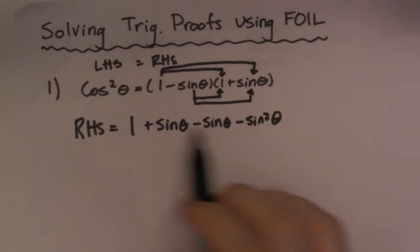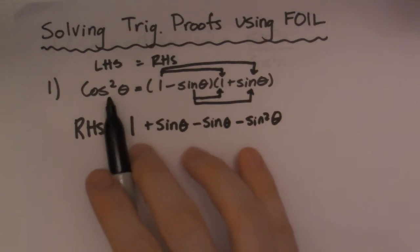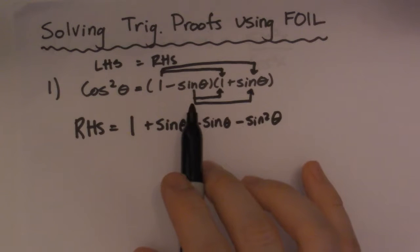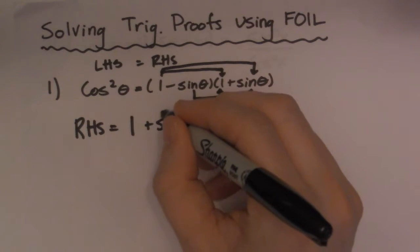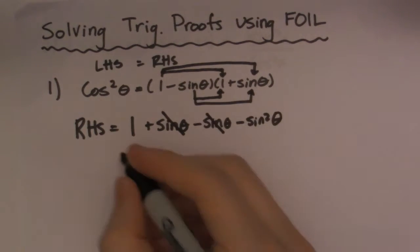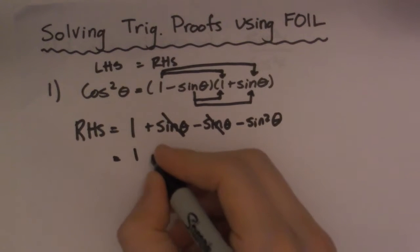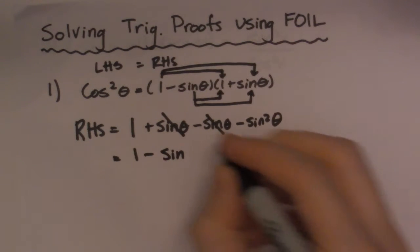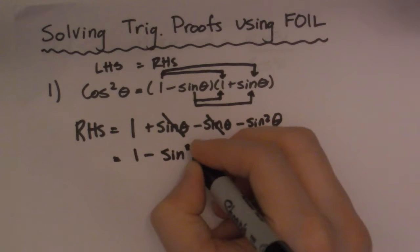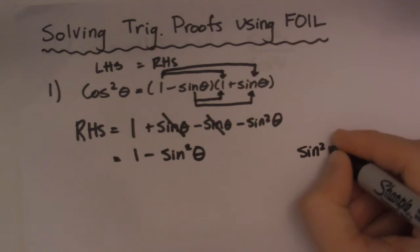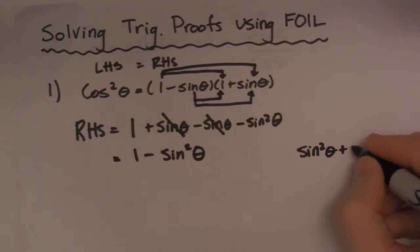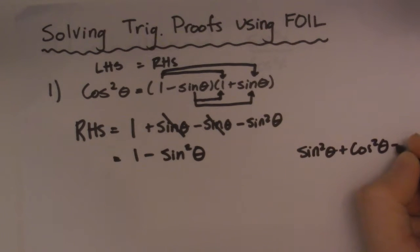So ultimately what we're trying to do is we're trying to prove that this right hand side equals cos squared. So we're looking to use one of our identities. So there are a lot of them. So as I come across them, I'll show you them. So then we'll cancel out these signs. Generally with FOIL, you're hoping you get to use your Pythagorean identity. So you get to use this, 1 minus sine. So one of our identities is sine squared theta plus cos squared theta is equal to 1. So that's the Pythagorean identity.